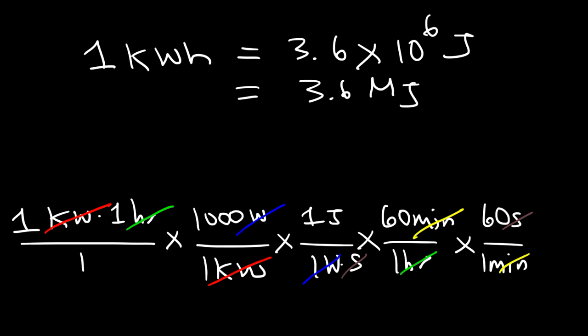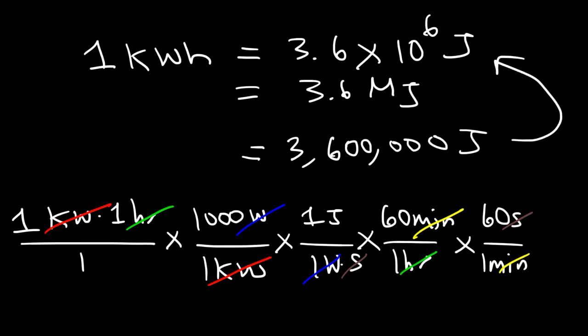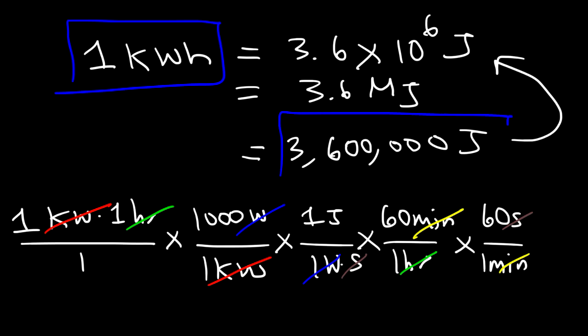So to get the answer it's going to be 1000 times 60 times 60, which is equivalent to 3,600,000 joules — that's 3.6×10⁶ joules. And so that's a kilowatt hour: that's how much energy in joules it represents. So now you know what a kilowatt hour is — it's simply a unit of energy.